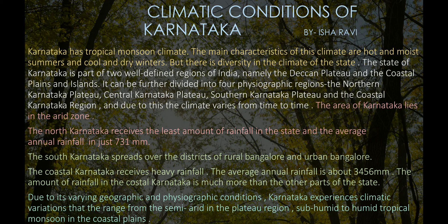Due to varying geographic and physiographic conditions, Karnataka experiences wide climatic variation — ranging from semi-arid in the plateau region to sub-humid and humid tropical monsoon in the coastal plains.